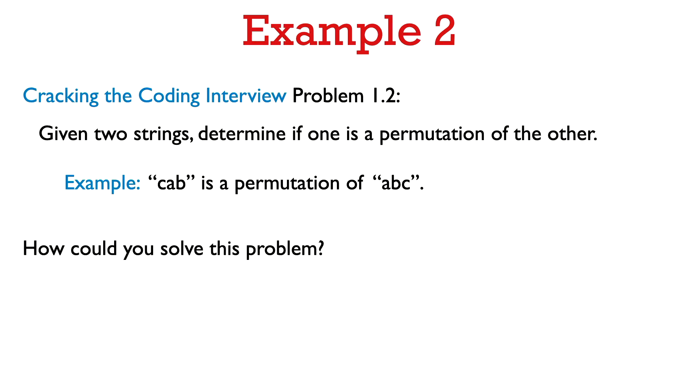So here's another example problem, which I found in the book Cracking the Coding Interview. This is problem 1.2 from Cracking the Coding Interview. So we're given two strings, and we want to determine if one is a permutation of the other. For example, cab is a permutation of ABC. So how could you solve this problem? Can you think about a way to solve this problem using sorting? Okay, I'll leave that as a puzzle for you.